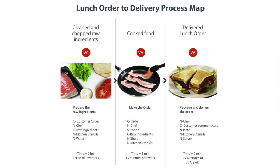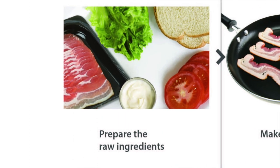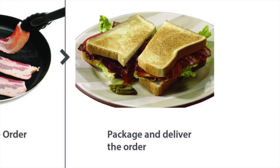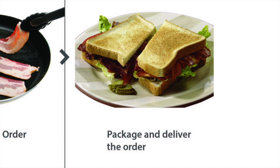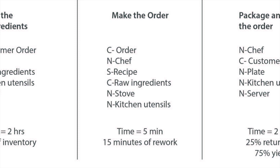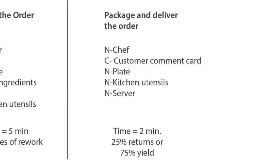Let's walk through each step of creating a process map using a simple example of a lunch order to delivery. In step one, the process steps are: prepare the raw ingredients, make the order, and package and deliver the order. Notice how each process step begins with a verb. Data collected shows preparing raw ingredients takes two hours with a five-day inventory; making the order takes five minutes with 15 minutes of rework; and packaging and delivering takes two minutes. Notably, 25% of all orders are returned by customers.